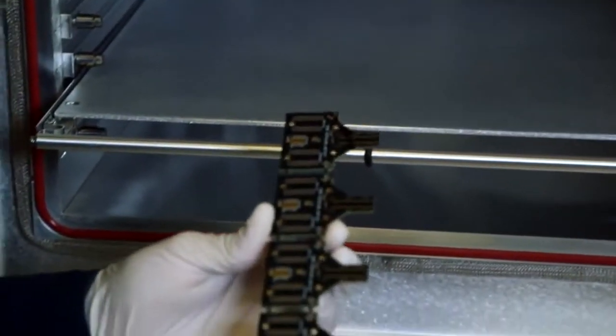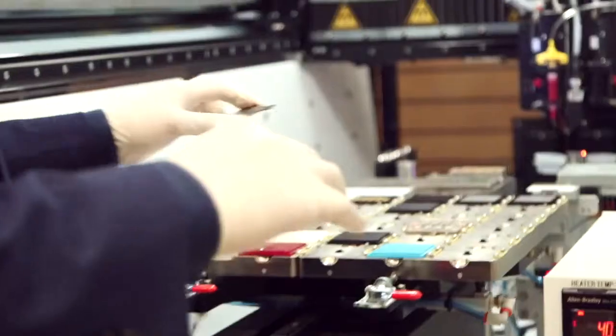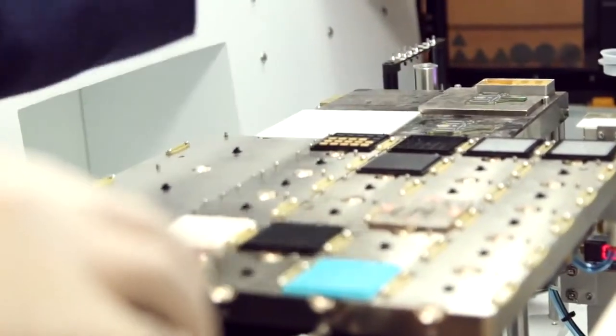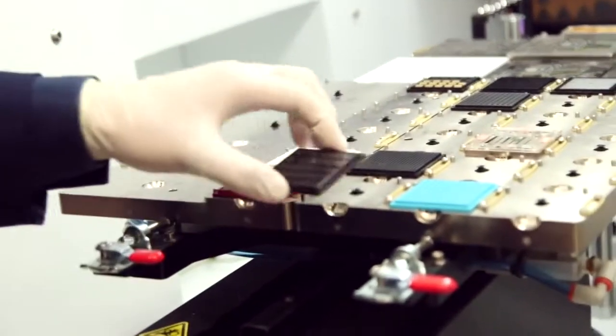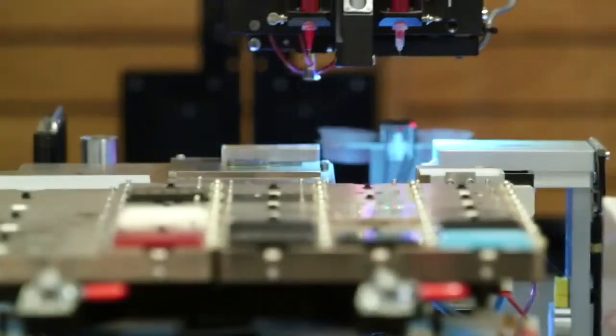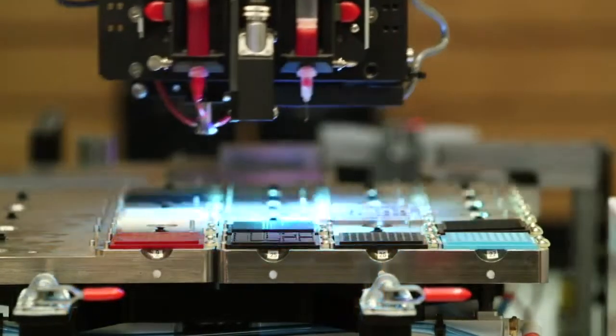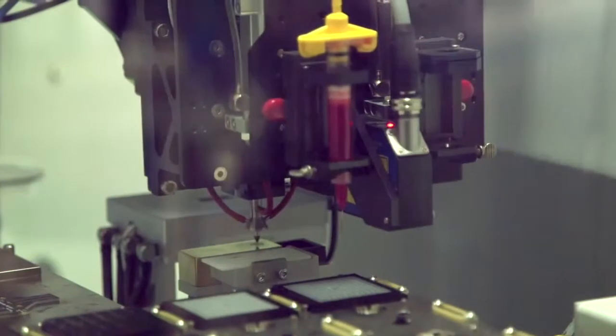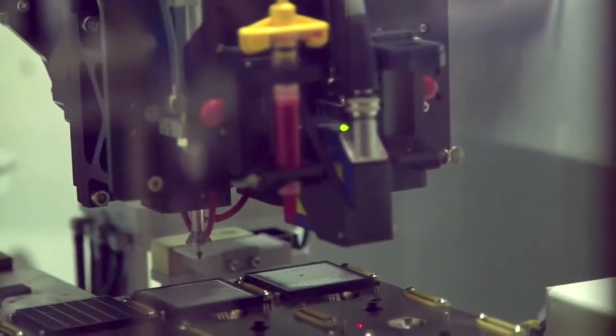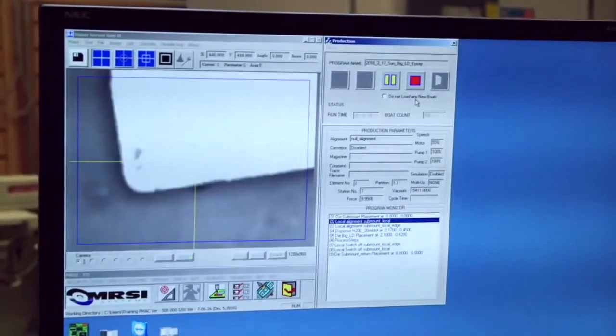The next step is to use the MRSI die bonding tool to attach a die or a chip to the substrate. This is an automated high-speed machine with an accuracy of 3 micrometers. It can pick up dies, place them on a printed circuit board, and bond them with epoxy. It can also be programmed using pattern recognition.